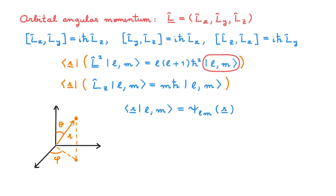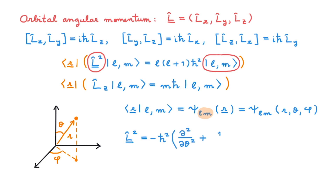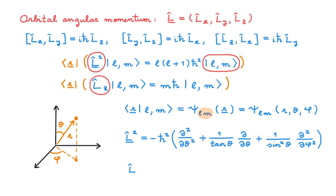The projection of the eigenstates gives the wave function of the system, which I write as psi lm of r. I am labelling the wave function with the quantum numbers l and m to identify the corresponding eigenstate. As we'll work in spherical coordinates, we can write the vector r in terms of the corresponding coordinates. For the operators, we already derived all the relevant quantities in the position representation using spherical coordinates in the corresponding video linked in the description.